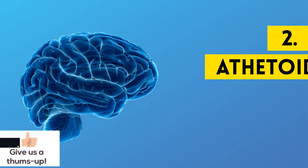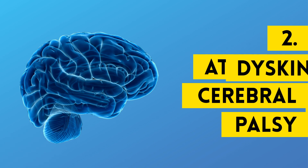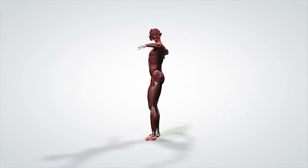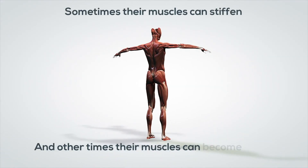The second form is called athetoid cerebral palsy, also known as dyskinetic CP, and it causes involuntary movements. Children with athetoid CP may also experience changes in muscle tone. Sometimes their muscles can stiffen, and other times their muscles can become floppy and weak. They may also experience shakiness and unsteadiness.